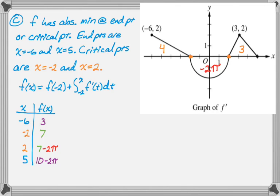So 7 minus 2π is like 7 minus 6.28, so that's actually less than 1, and 10 minus 2π is 10 minus 6.28. Obviously 7 minus 2π is smaller than 10 minus 2π, so the minimum value, the absolute minimum value, actually occurs at that critical point there. So the absolute minimum value is 7 minus 2π, and that's going to happen at x equals 2.